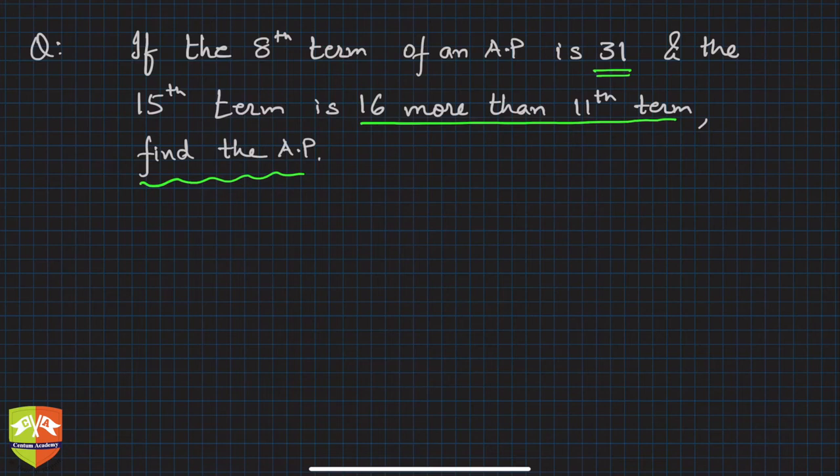So this is what finding the AP means: first term and common difference. If you find these out, you can find the AP. Now, the 8th term of an AP is 31, so how to solve it? We will be using some knowledge of linear equations in this problem. Whatever we have learned in linear equations in two variables would be applicable here.